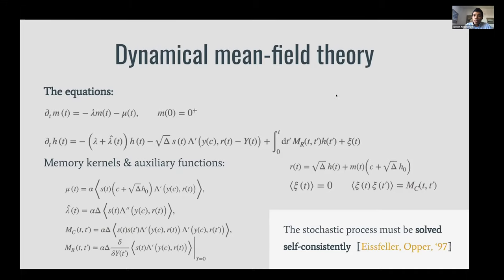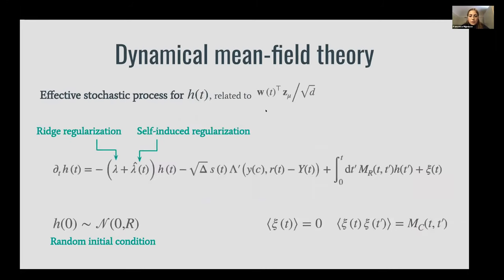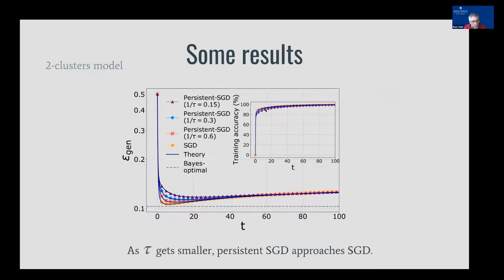I think there are no more questions unless some panelists have questions. I want to learn a little bit more about the persistent SGD. It seemed to me that from the plot of performance, particularly the generalization error, classical SGD was closer to the Bayes optimal than the persistent SGD. So I'm curious as to what is the significance of the analysis of persistent SGD—what do I gain by doing it in a persistent manner?